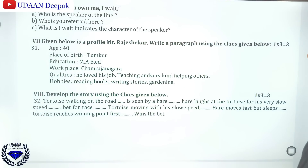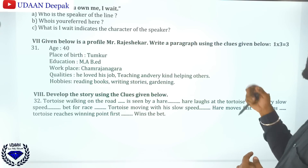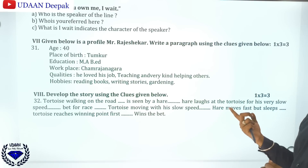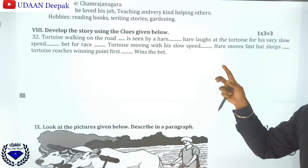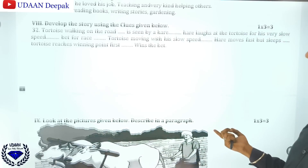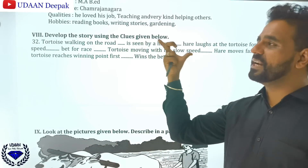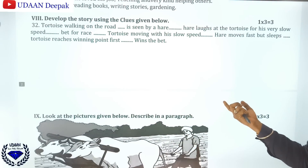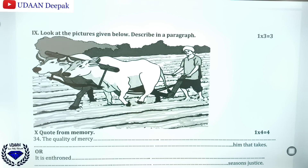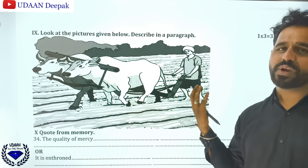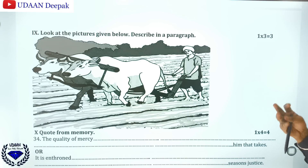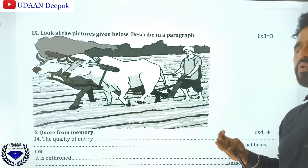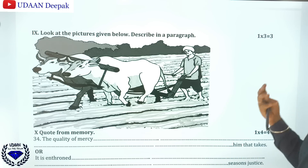Then you will have the profile of Mr. Rajshak — write a paragraph using the given clues about his profile. Next, develop a story using the clues given below and recreate your own story. Then there is a three-mark question where you should look at a picture and describe it in your own words in English. You can see a farmer plowing with buffaloes — describe what he is doing in at least four to eight lines.